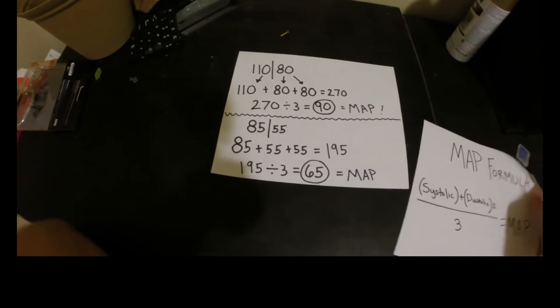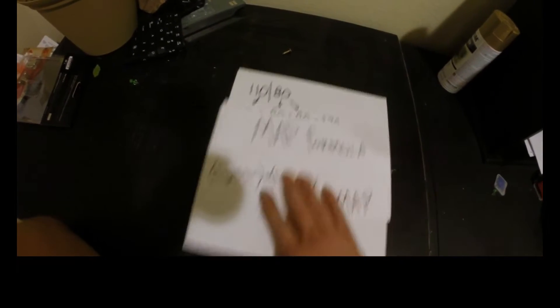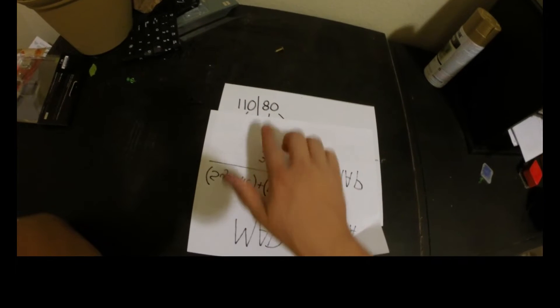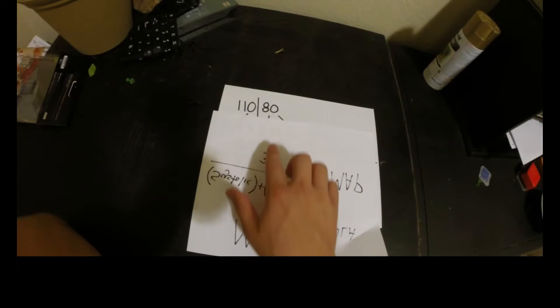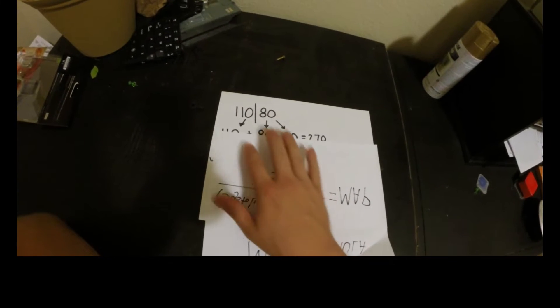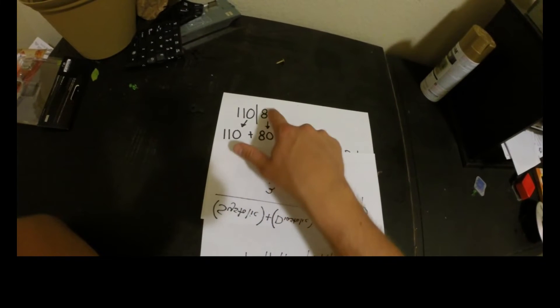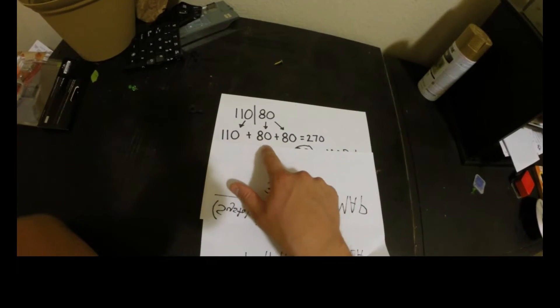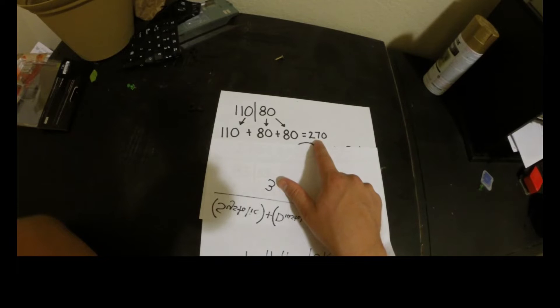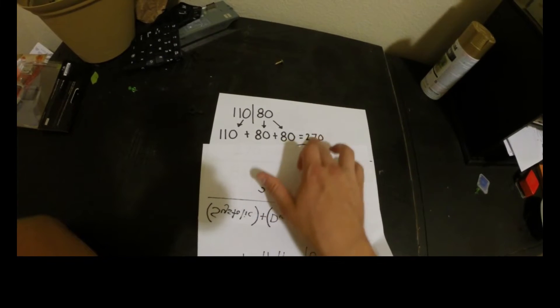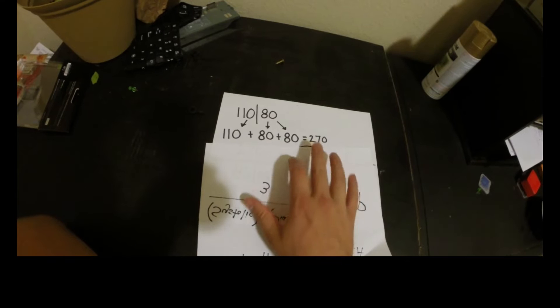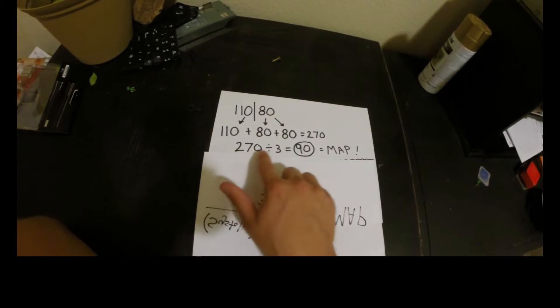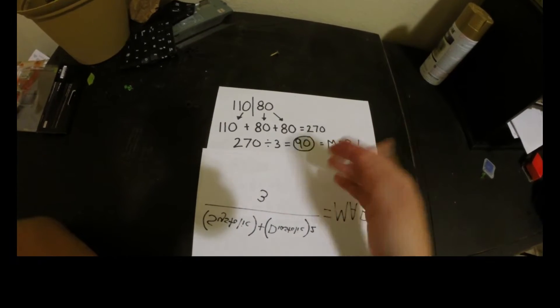So let's put this into a different writing form. If I take this paper right here, let's say your blood pressure was 110 over 80. So you're going to take that systolic number, bring it down. That's 110. And then your 80, you're going to bring it down twice because we timesed it by two. So 110 plus 80 plus 80, and that's going to equal 270. So this number, you're always going to divide by three. 270 divided by three equals 90. That's your MAP.